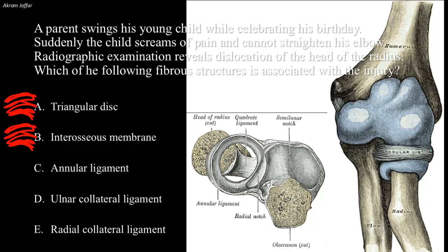The annular ligament is funnel-shaped in adults, but its sides are vertical in young children. Thus, a sudden pull of the arm of a child may partially dislocate the radial head through the ligament. This is what is called pulled elbow, or nursemaid's elbow. And the answer C is correct.